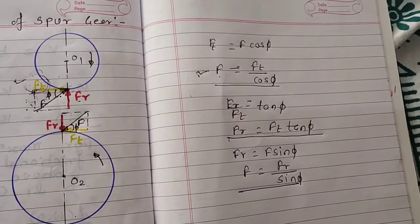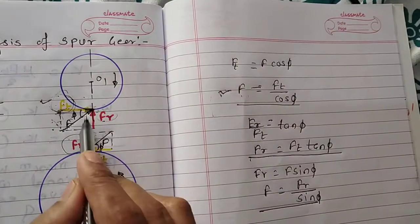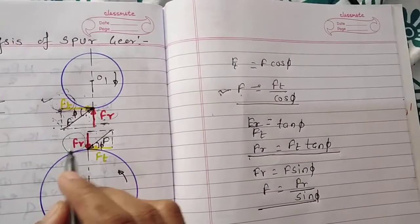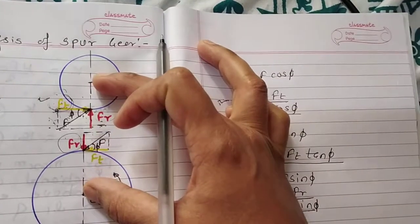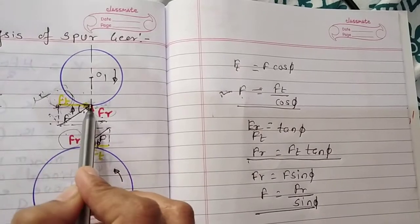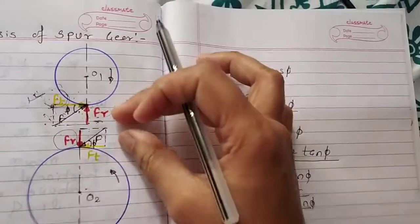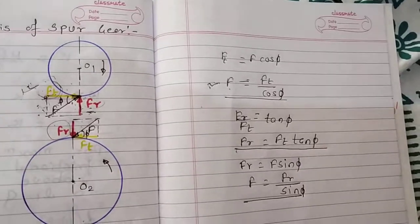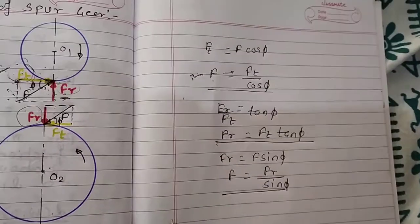Now see this radial force carefully. Radial force acts towards the center of the gear, so radial force always tends to separate two gears. Only the tangential force is required because it is used to transmit the power and motion. But the radial force, when it is more, tries to separate the two gears because it acts towards the center of the gear.